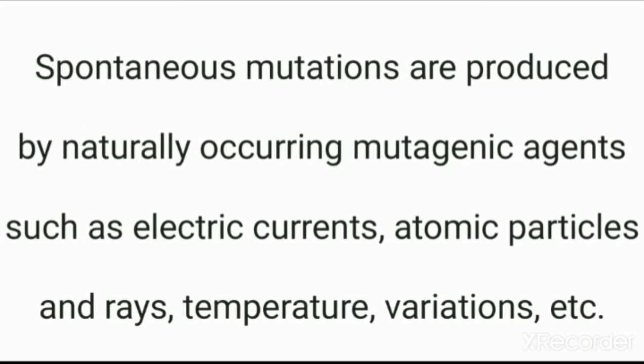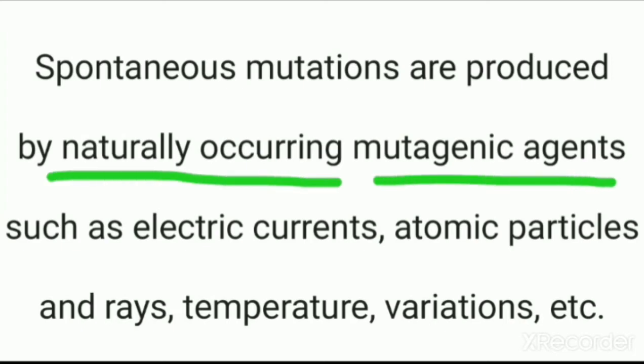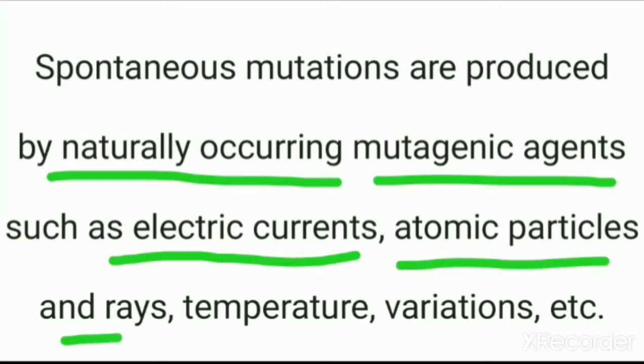Spontaneous mutations are produced by naturally occurring mutagenic agents. These are mutations which occur due to mutagenic agents naturally present in nature. For example, electric current, atomic particles, rays, temperature — various natural variations. Because these occur in nature on their own, we call them spontaneous mutations.